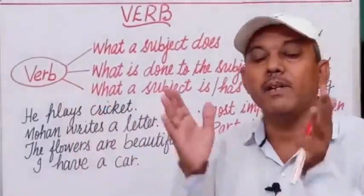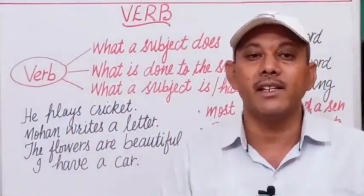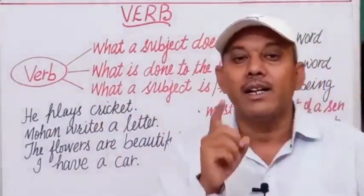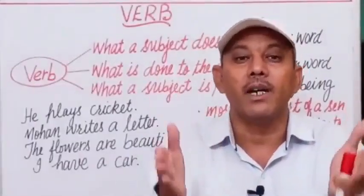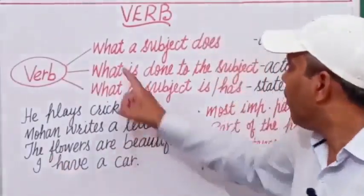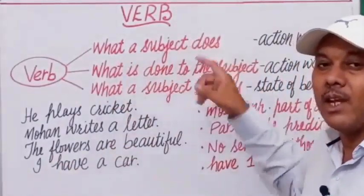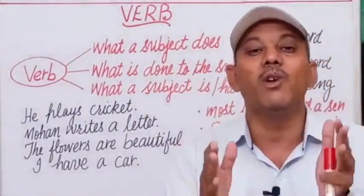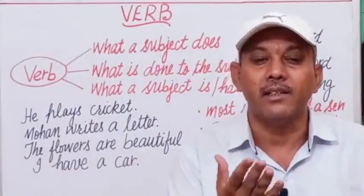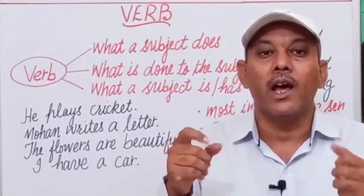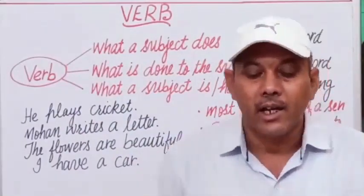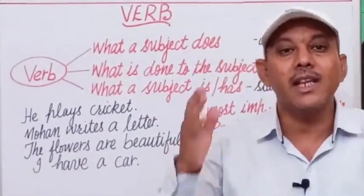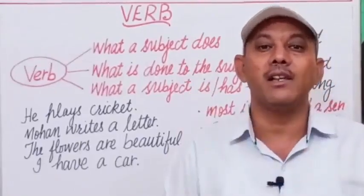What does a verb do and what is its role in a sentence? A verb tells us about a person, thing, or subject — what a subject does. The word that tells us what a subject does is an action word. For example: speak, teach, write, read, play, run, sit, stand. These action words are known as verbs.